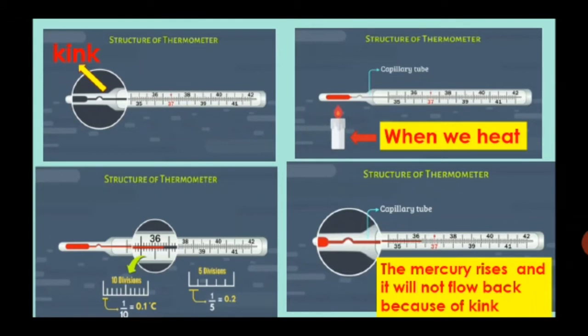Now children, let us discuss more about the structure. In clinical thermometer, there is a slight bend. Children, you can see in the picture just near the bulb. Do you know what we call this bending part? Yes, this bending part is known as kink.